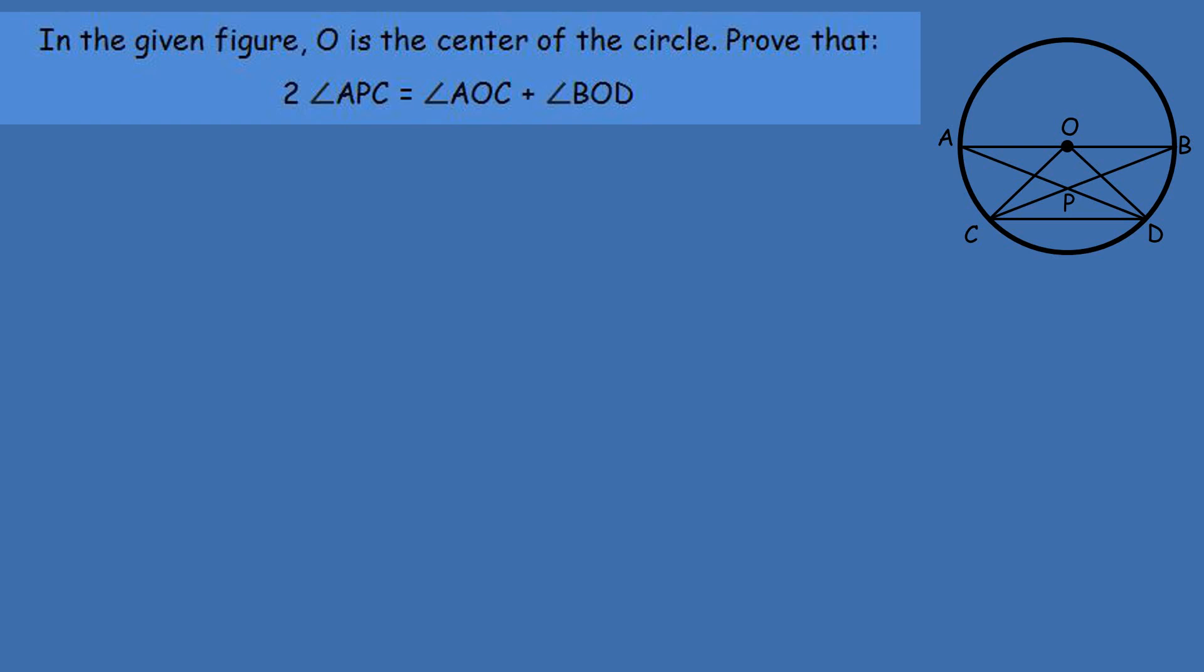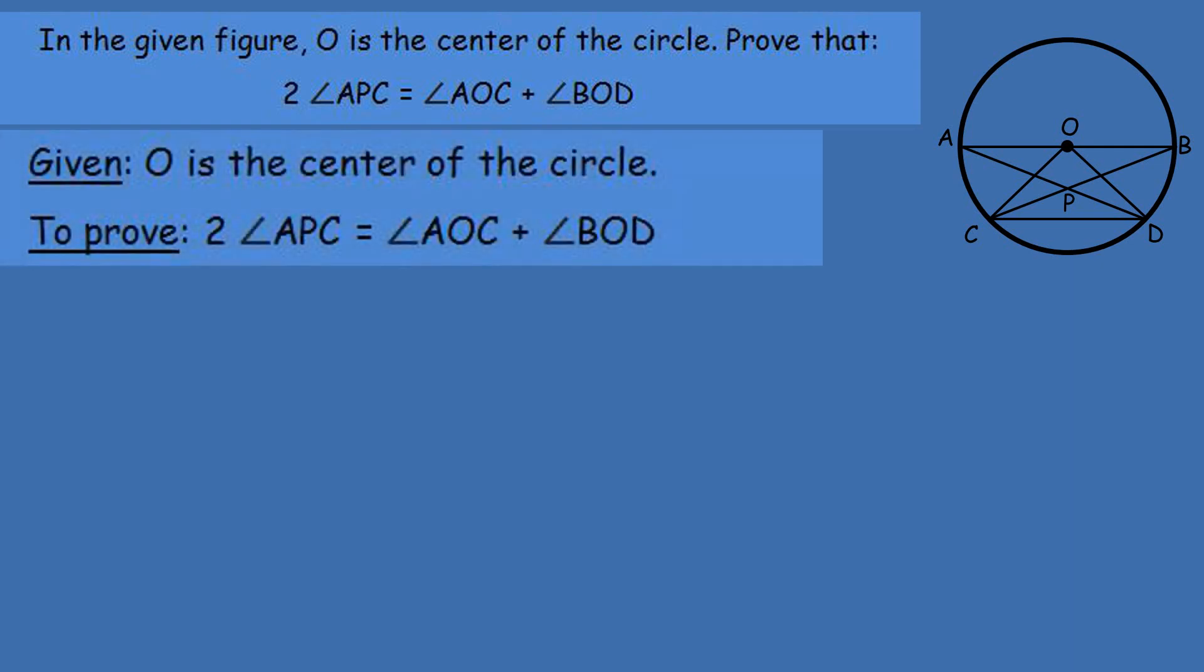2 times angle APC is equal to sum of angle AOC and angle BOD. In the figure, O is the center of the circle. To prove: 2 times angle APC is equal to angle AOC plus angle BOD.